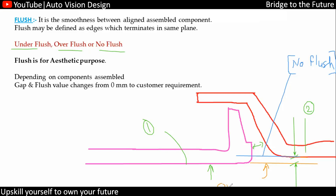This is what we call the no flush condition. Now, over flush — where does that term come from? And also, under. This depends on the assembly — how the parts get assembled. Looking at part one and part two from the Class A side, you can understand that part two will be assembled first, because if part one is already assembled, you cannot assemble part two from this side.